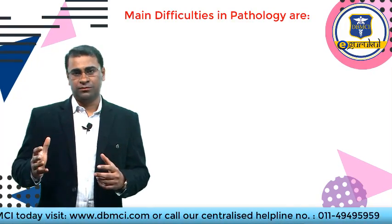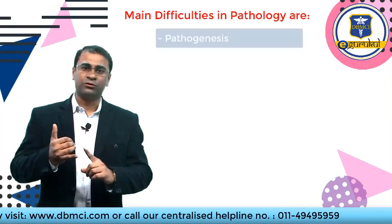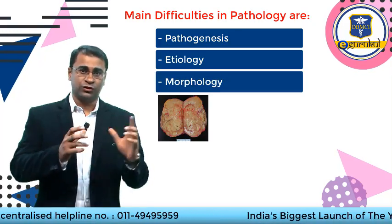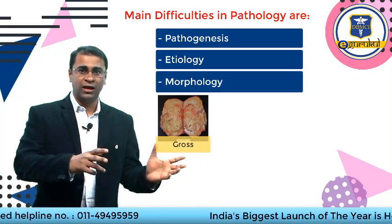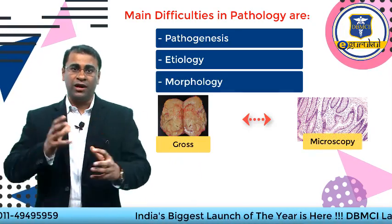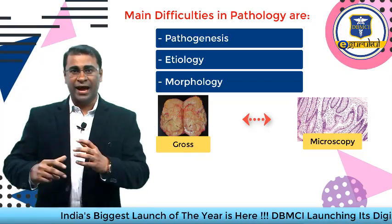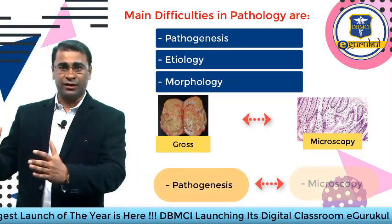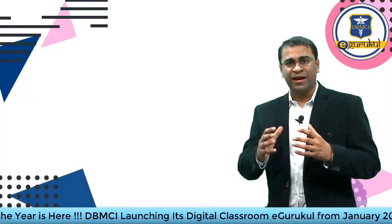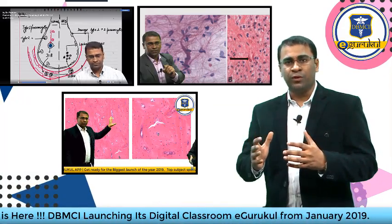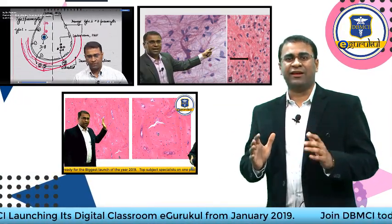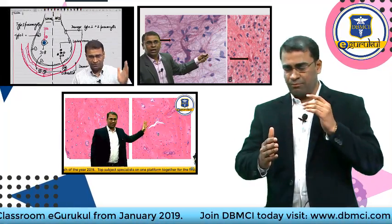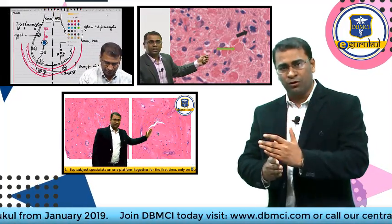What are the main difficulties in pathology? There is pathogenesis, etiology, morphology, gross morphology, and microscopy. Then there is the correlation between gross and microscopy, and further correlation between pathogenesis and microscopy. So here I come with a detailed solution that integrates pathogenesis, gross morphology, and microscopy in a most conceptual manner.